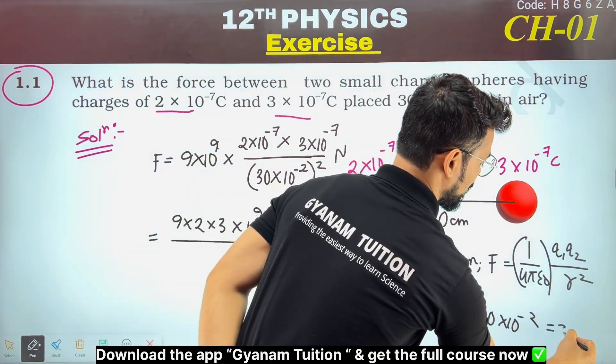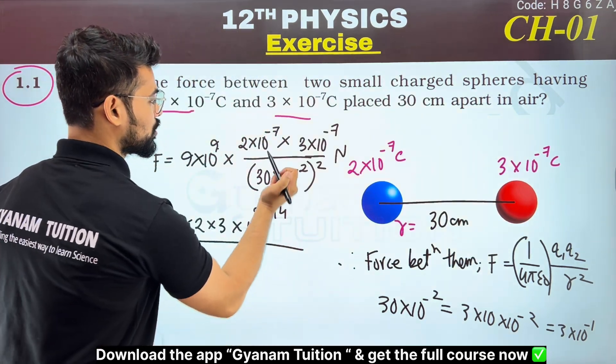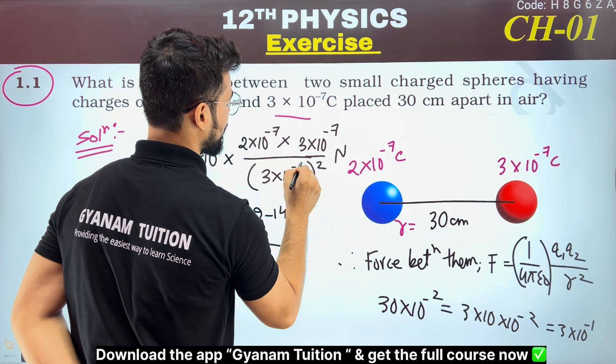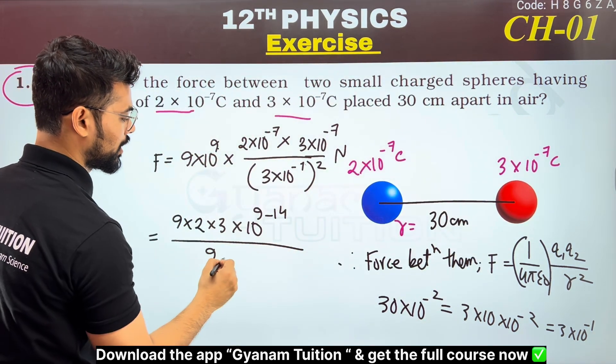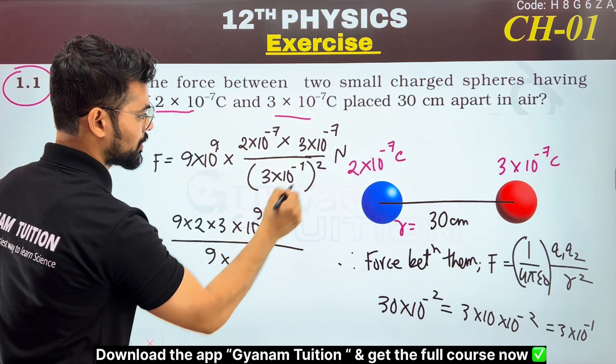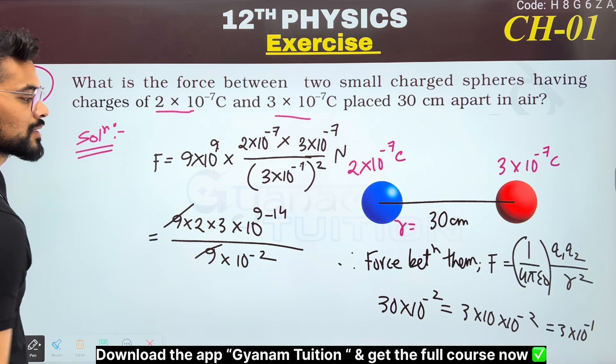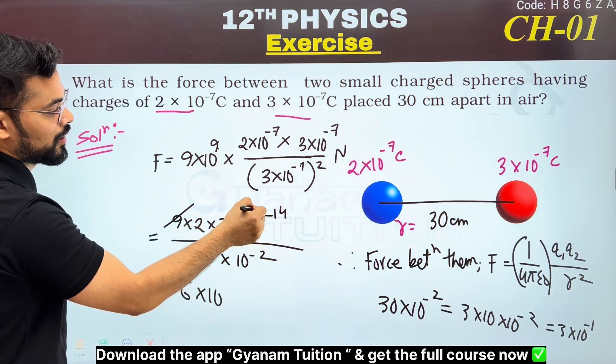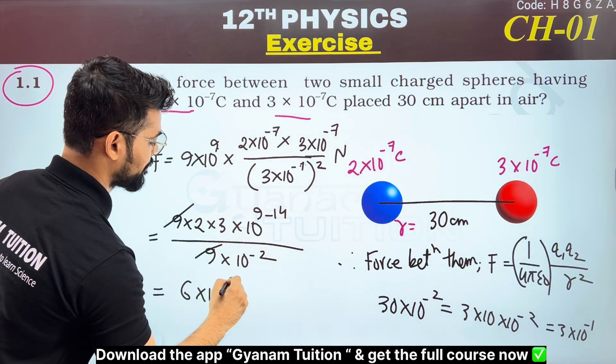This gives 3×10⁻¹. So we have 2×3 equals 6×10 to the power... minus 5 and minus 2 combined.